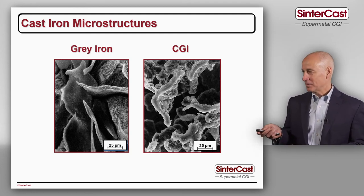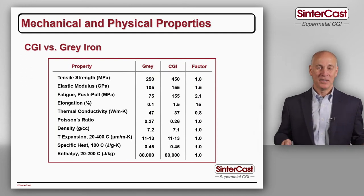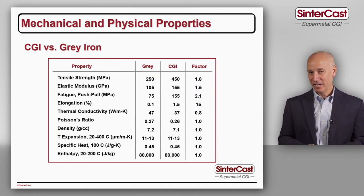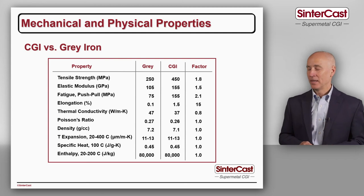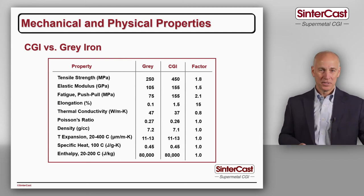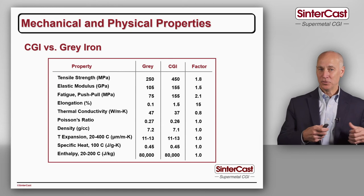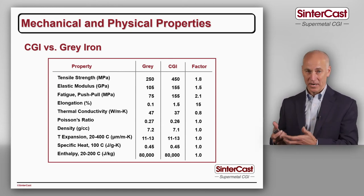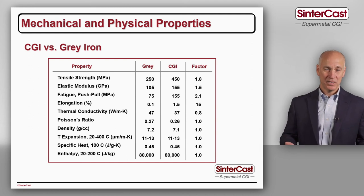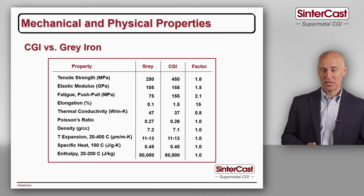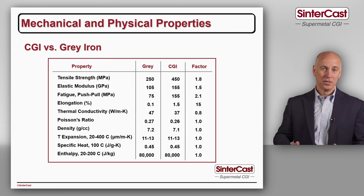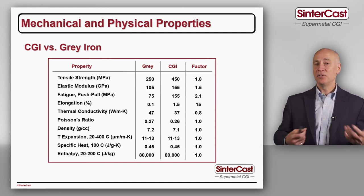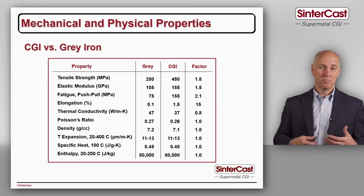Looking at a simple overview of the mechanical properties: tensile strength in CGI is at least 75% higher, elastic modulus or stiffness is about 50% higher, and the fatigue strength — no matter how you measure it, whether in tension, compression, rotating bending, three-point bending, or torsion — is always double, because it's more difficult to initiate a crack and more difficult for that crack to propagate. That's ultimately what design engineers design to, allowing them to reduce wall thickness, reduce the size and weight of the engine, and push it harder for more efficiency and better fuel economy.